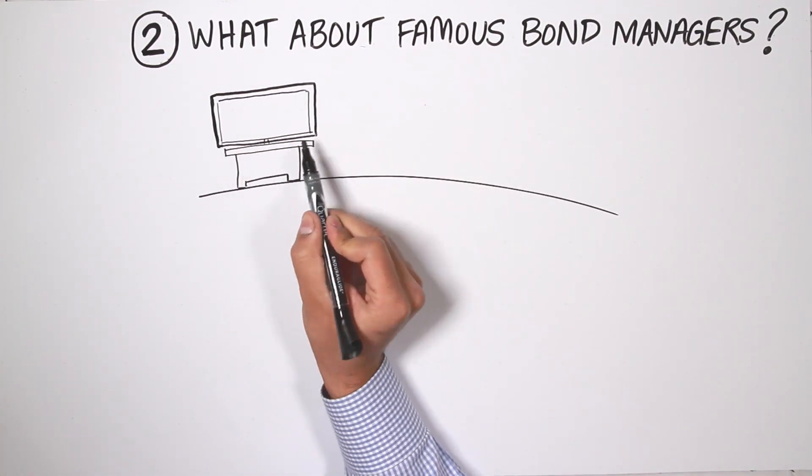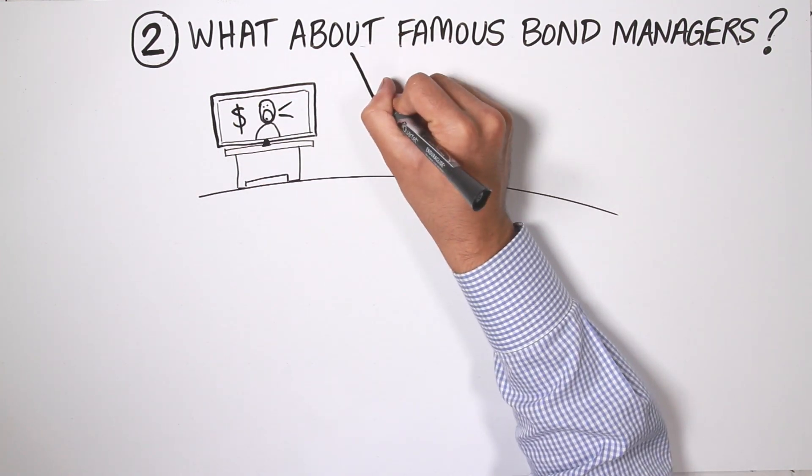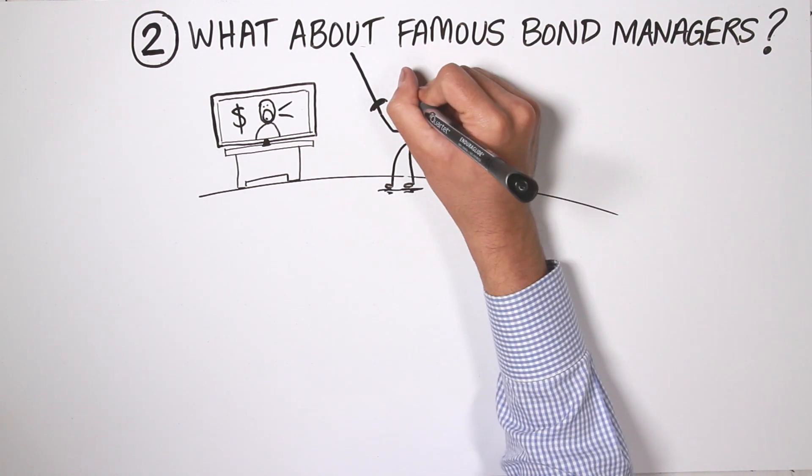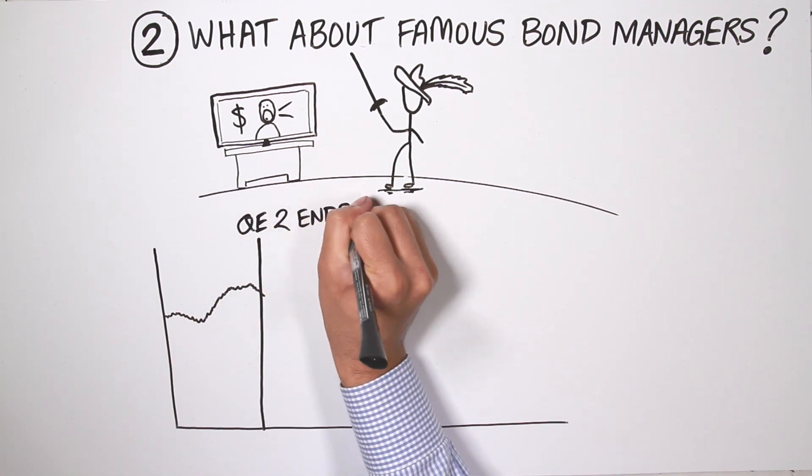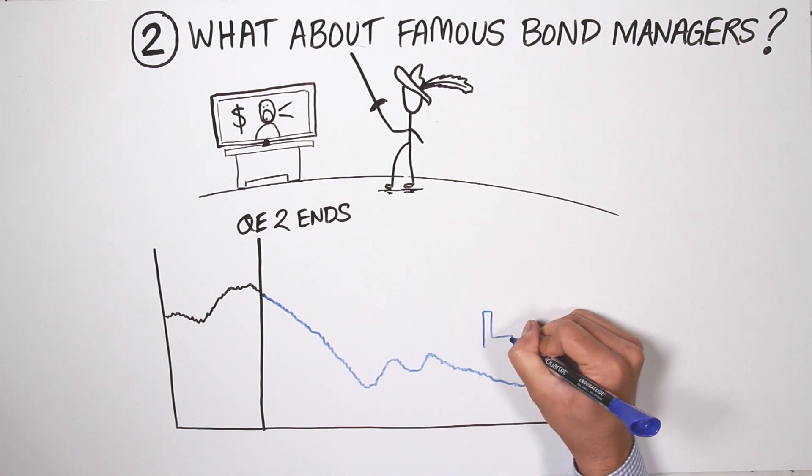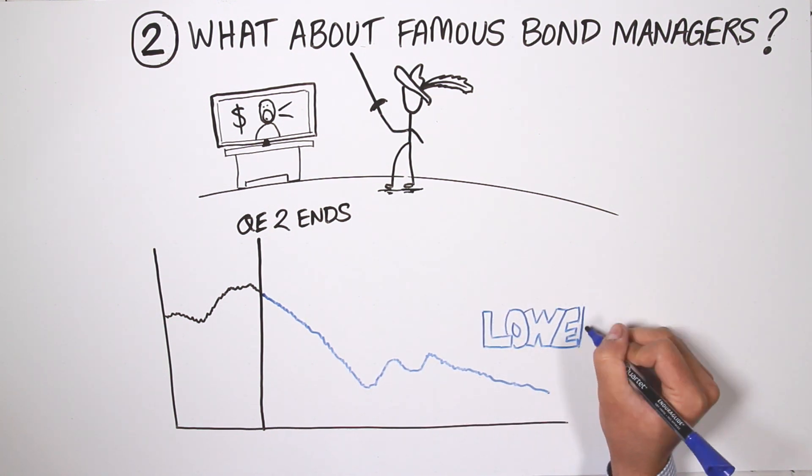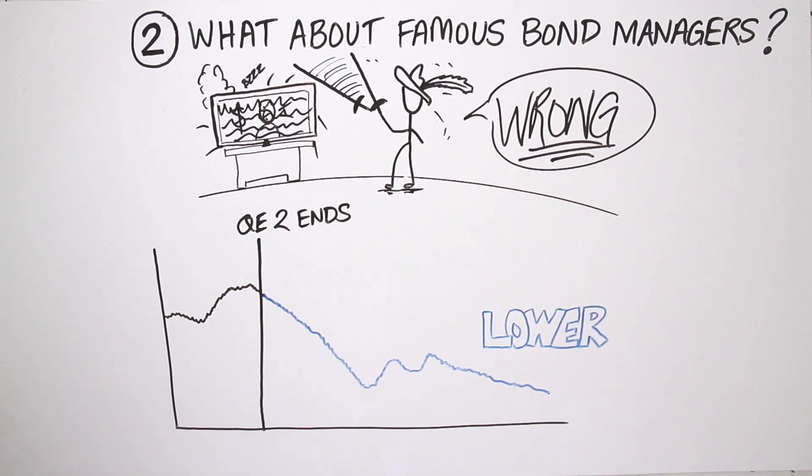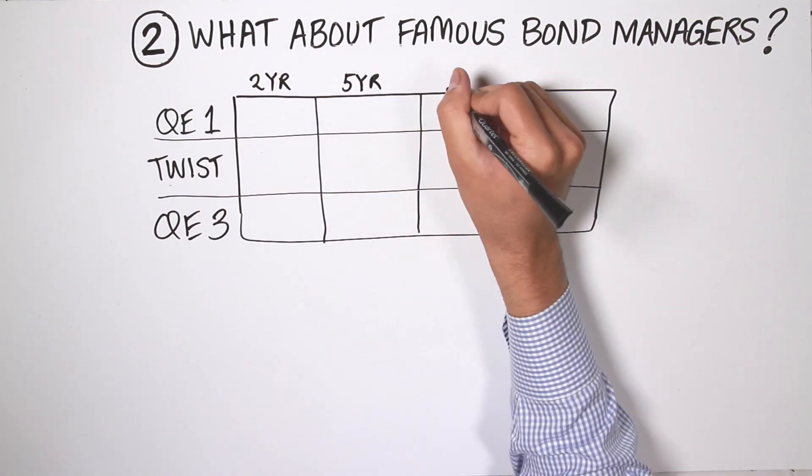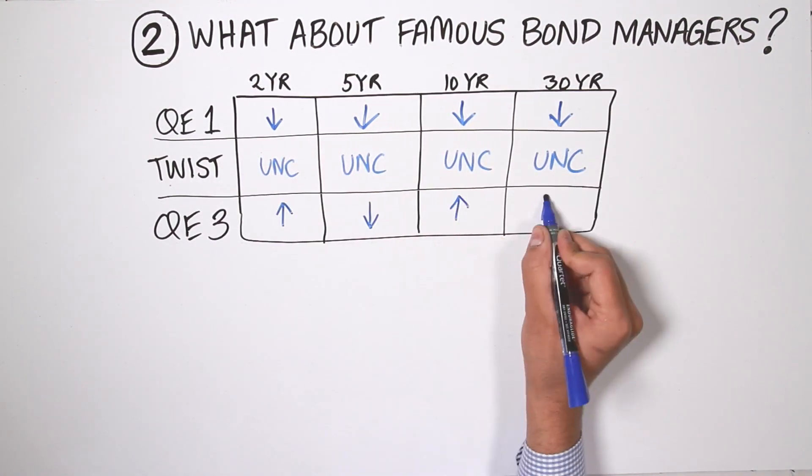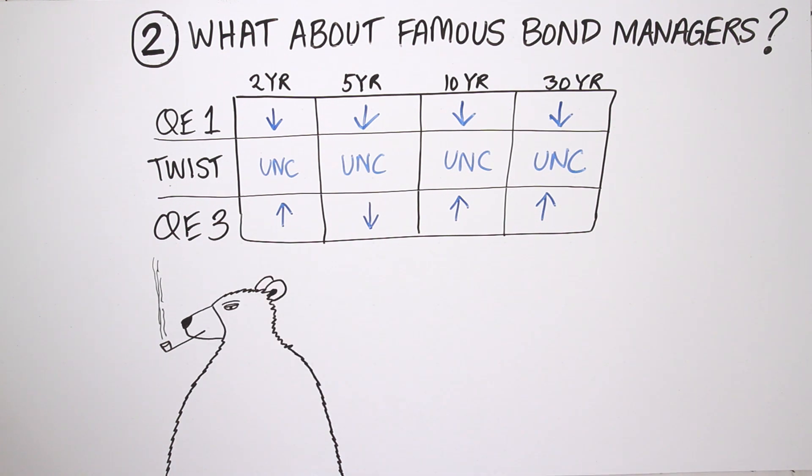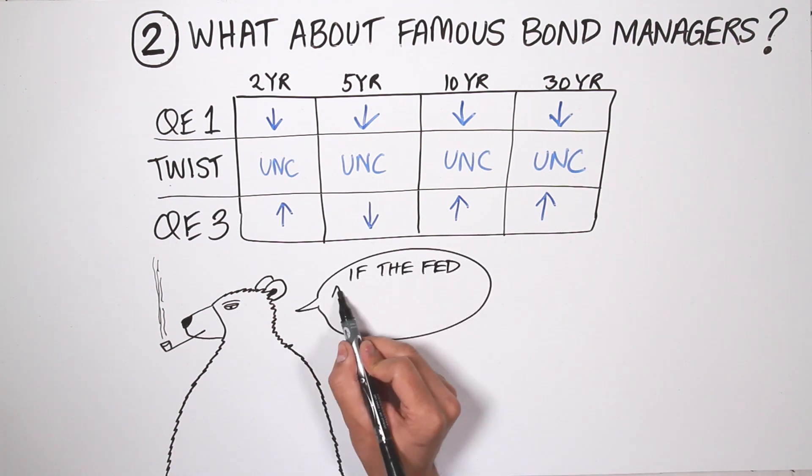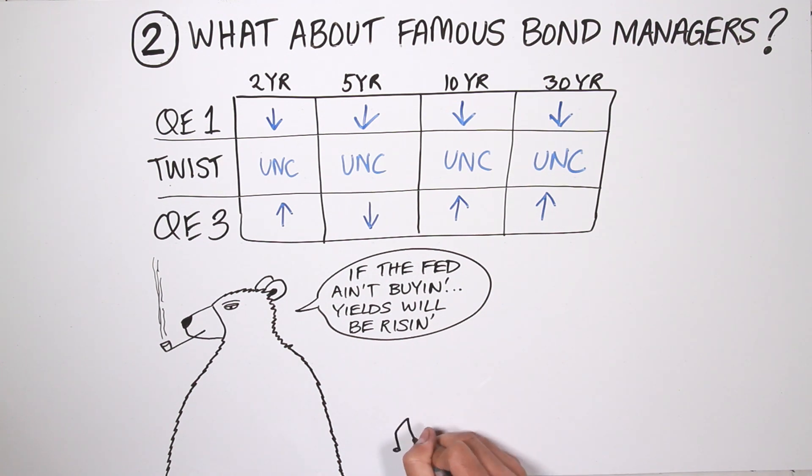Second, what about those bond managers that go on TV and worry about the balance sheet? Well, this has happened a number of times over the years, most notably before the end of QE2. Bond managers were on TV saying, who will buy treasuries when the Fed steps away? Well, lo and behold, someone was buying treasuries because treasury bond yields were actually lower after the end of QE2. And we looked at a couple of other episodes in history where the Fed's been changing its balance sheet, and the results are, well, inconclusive. Sometimes bond yields are up. Sometimes bond yields are down. Sometimes bond yields are unchanged in the 12 months after a change to the Fed's balance sheet. So if you're out there saying if the Fed ain't buying, yields will be a rising, you will probably be wrong.